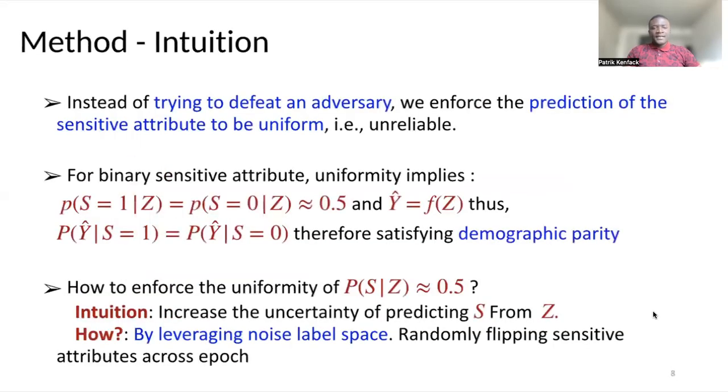Now we'll present our method. As I said earlier, we do not want to try to defeat an adversary, but we would like to enforce the uniformity of this sensitive attribute prediction from the latent space. How does this work? If we achieve this goal, this means that predicting S given Z is almost uniform or exactly uniform. Since we're going to use Z to train a classifier on the upstream task, since Z is independent from S, we are also sure that on the upstream task, the outcome will be independent from the sensitive attribute. Therefore, we will say that we have achieved demographic parity.